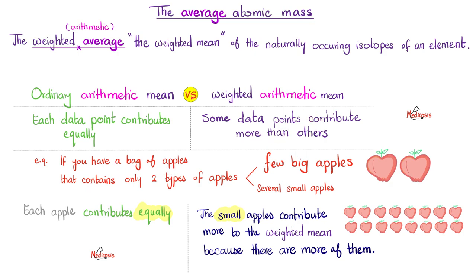Suppose you have a bag of apples containing only two types: few big apples and many small apples. If you're calculating the ordinary mean, each apple contributes equally regardless of its size or weight — it is not weighted. However, in the weighted arithmetic mean, the small apples contribute more because there are more of them. They are more numerous, so they tip the scale in their favor, and the weighted mean will be skewed more towards the smaller ones.